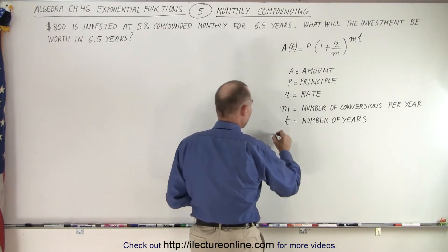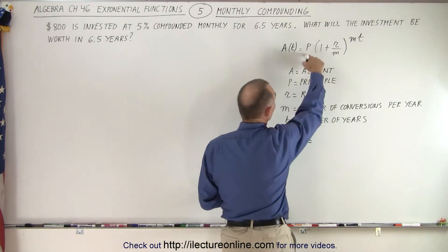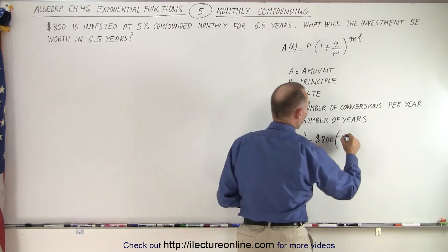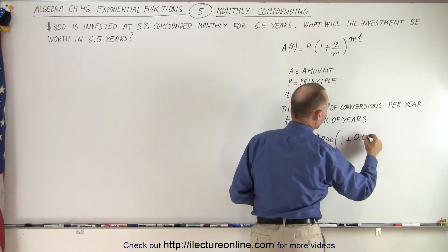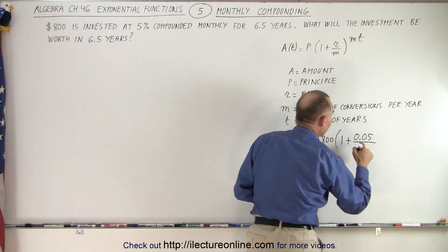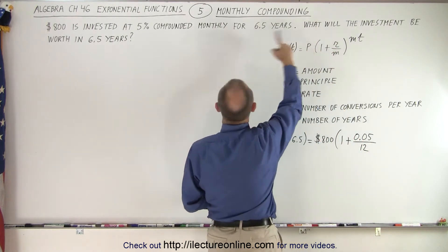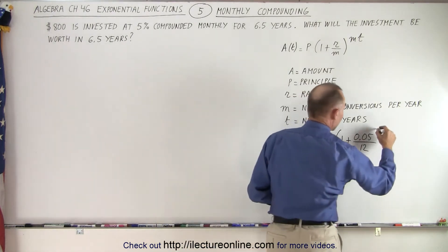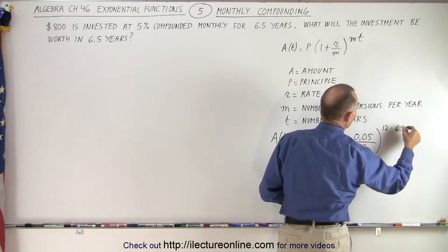So let's go ahead and do that. The amount when t equals 6.5 years is equal to the principal we invest, which is $800, times 1 plus the rate. The rate is 0.05 — that's 5% converted to a decimal — divided by the number of conversions per year, which is 12 because we're compounded monthly. We then raise to the exponent m times t, which is 12 times 6.5.